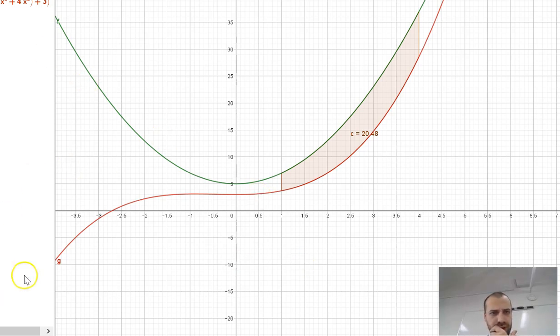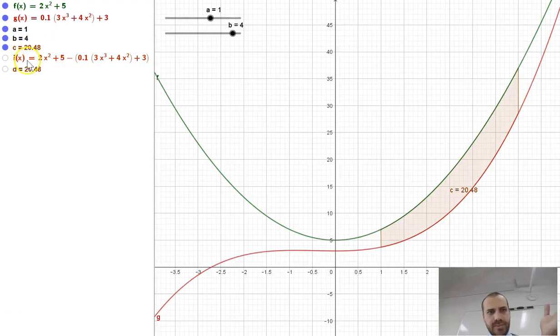Those functions are actually f of x, the green one, is 2x squared plus 5, a quadratic. And g of x is 0.13x cubed plus 4x squared plus 3, so it's a cubic.